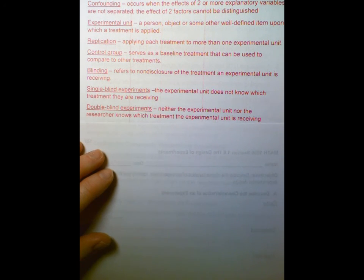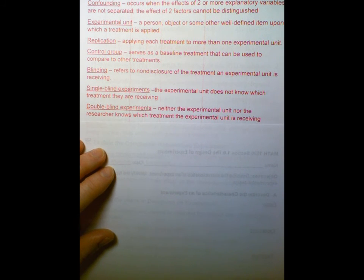And then double blind, where the experimental unit, the subject, doesn't know and the researcher doesn't know. So someone else, of course, knows. And if it's some kind of treatment that they're giving, even the researcher, the bottle looks the same, the pills look the same, and they're not told, so they don't treat the person any differently. So that's double blind.